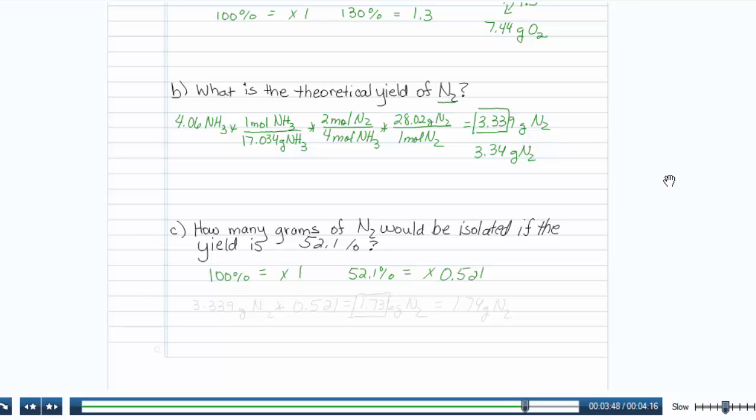So I will just take my 3.339 grams of N2 and multiply by 0.521. And it turns out that that is equal to 1.736 grams of N2, which again, to be concerned about sig figs is 1.74 grams of N2.